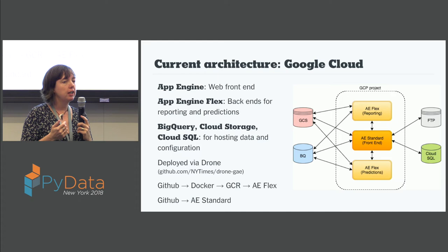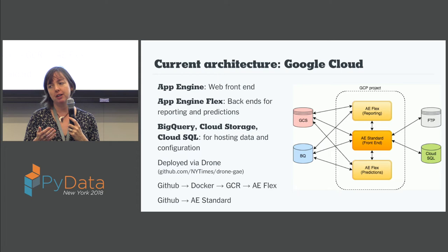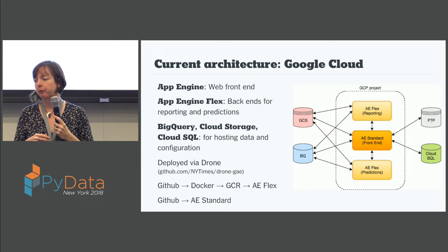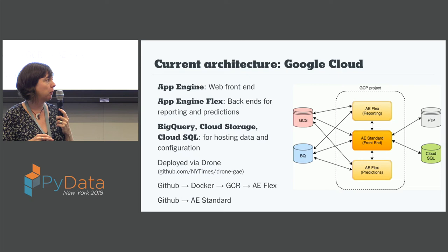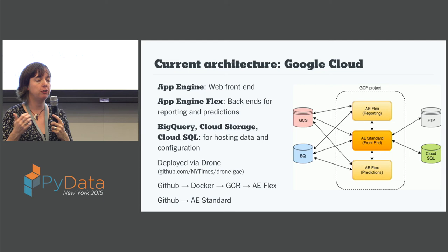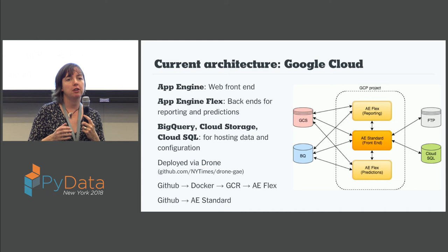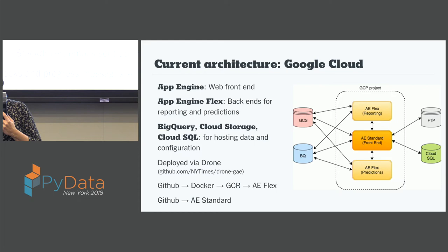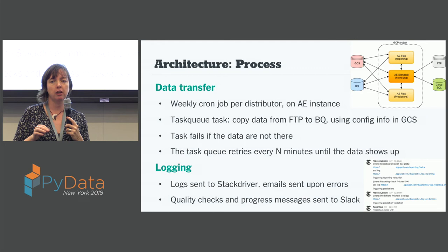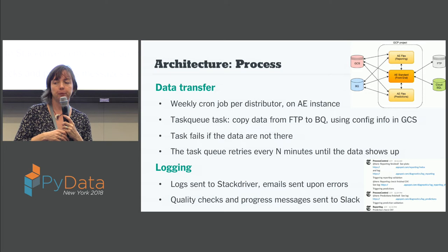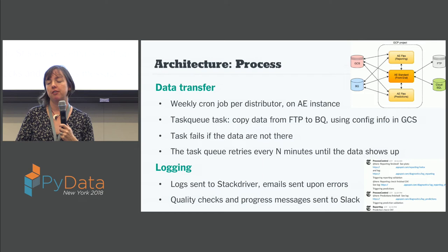We keep all of our data in various places — mostly BigQuery but also Cloud Storage, Cloud SQL, and a little bit of Datastore for hosting the sales data and config information. This is all deployed via Drone, so it's pretty straightforward for App Engine Standard to hook up from GitHub commits and tags to an App Engine deploy. For App Engine Flex it's a little more involved because you need to build your own container and then deploy that. The weekly process is similar to what I showed before: there's a weekly cron job per distributor hosted on App Engine Standard that takes advantage of task queue tasks.